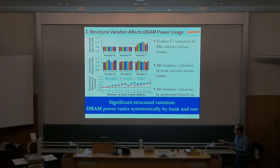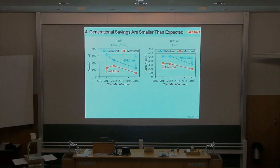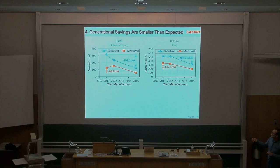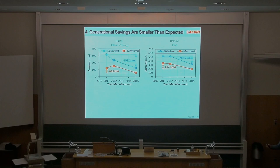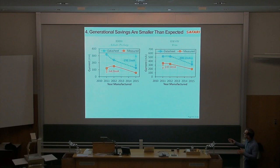Most interesting: these are data sheet values from DRAM manufacturers over generations from 2011 to 2015, showing a huge claimed reduction in power. But what we measured in real life shows that while there is a reduction, it's not as large as advertised. Maybe the reduction is coming from reduction of the huge margin put into the data sheet values to begin with, and not from any significant architectural change. We can only guess at this point because we don't know where these data sheet values really come from.